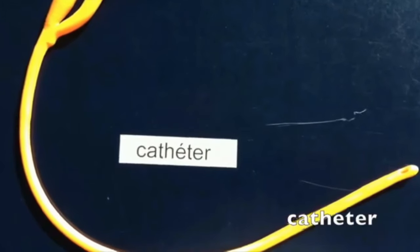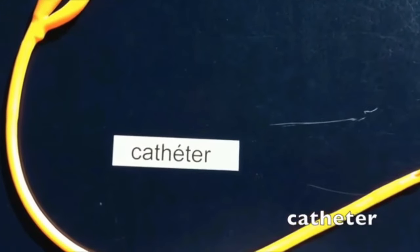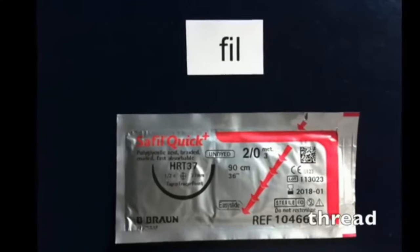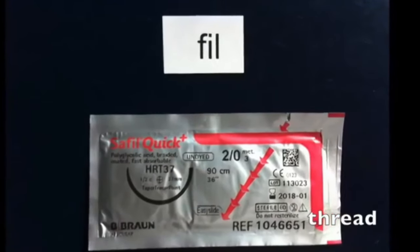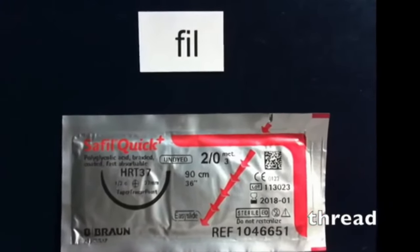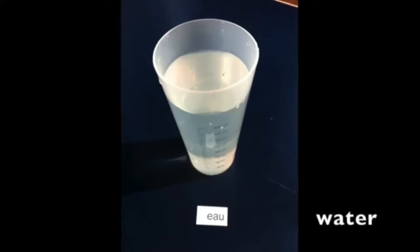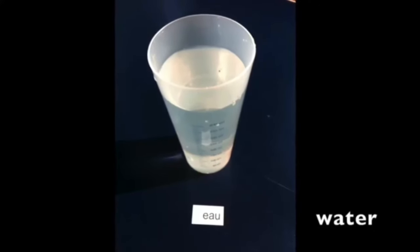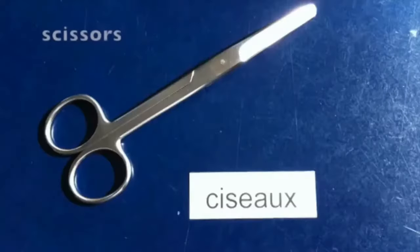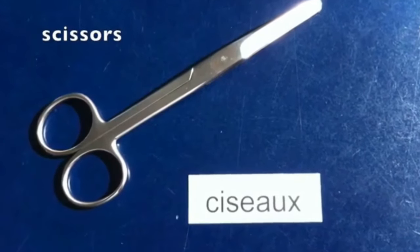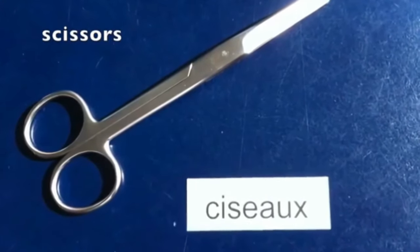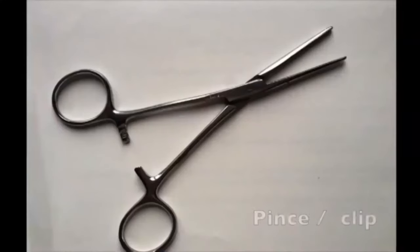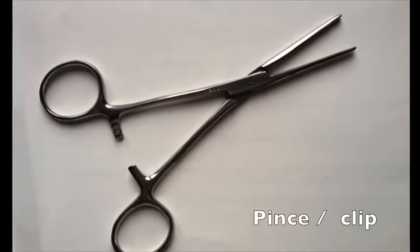You should have two of them. We need thread, we need ringer lactate or normal saline in a glass, or you can also cut the ringer lactate bottle. You should have scissors. This is an artery forceps to hold the catheters.